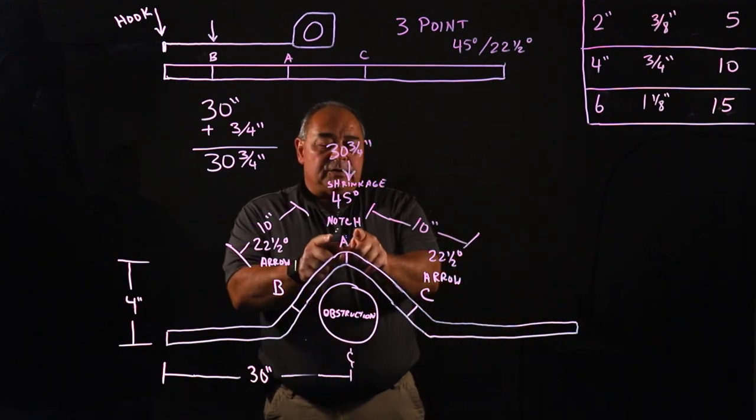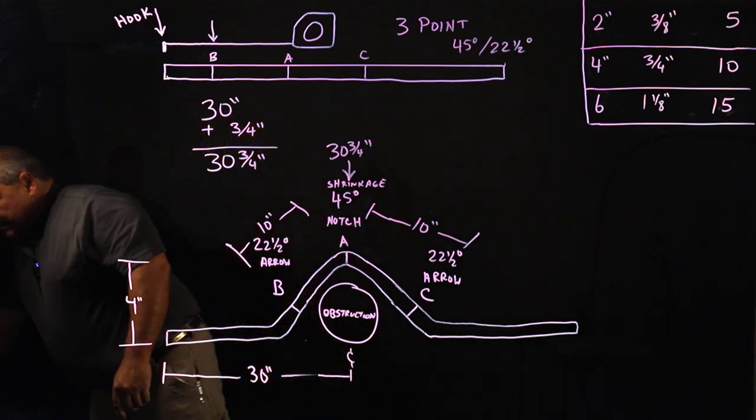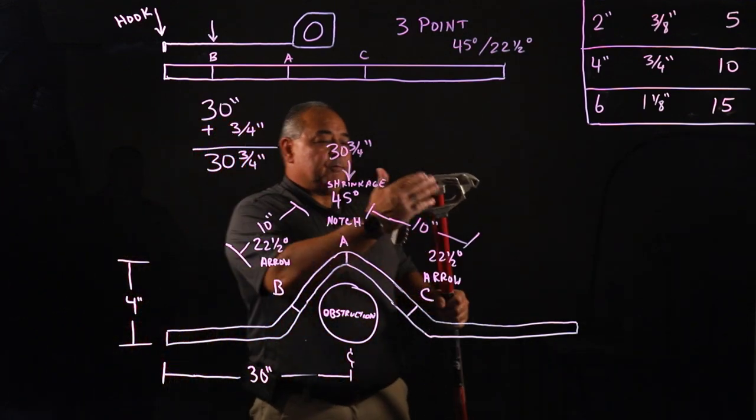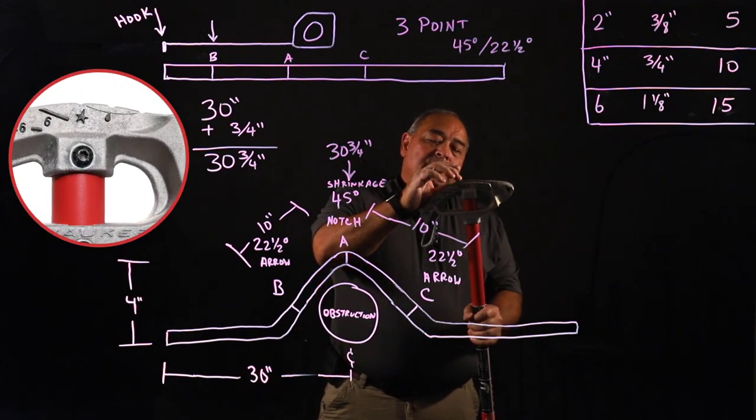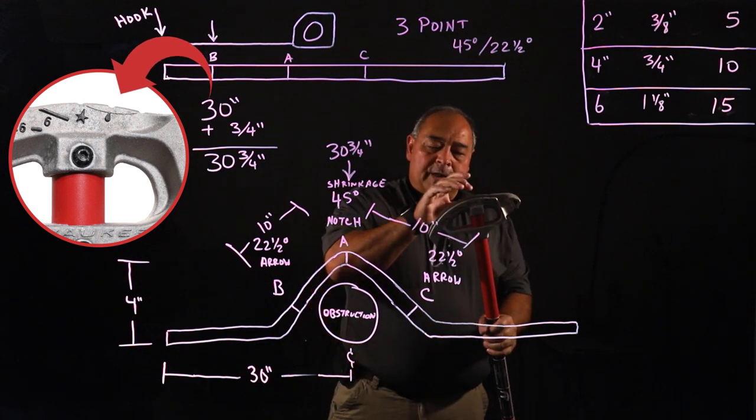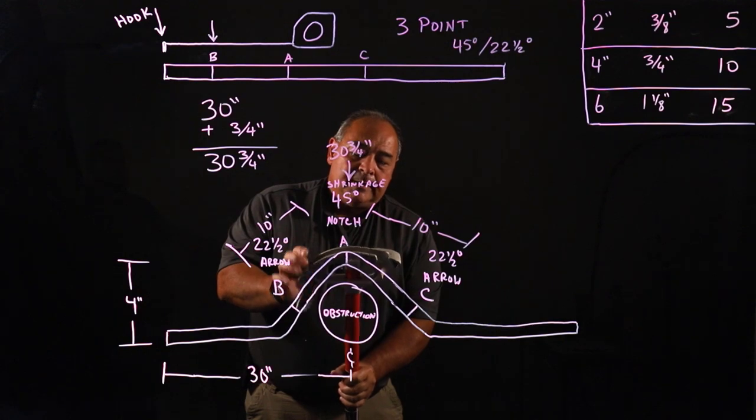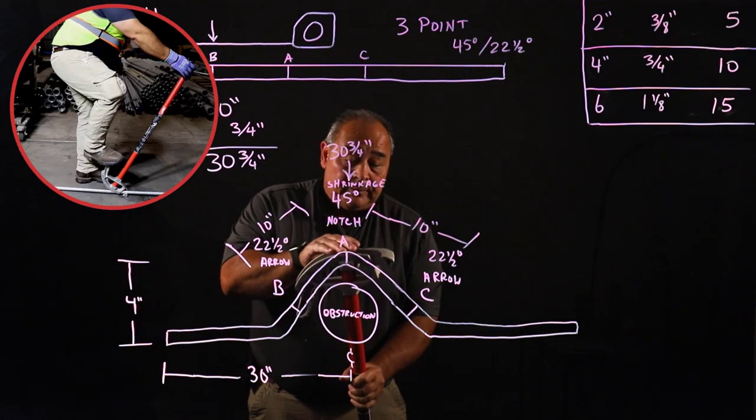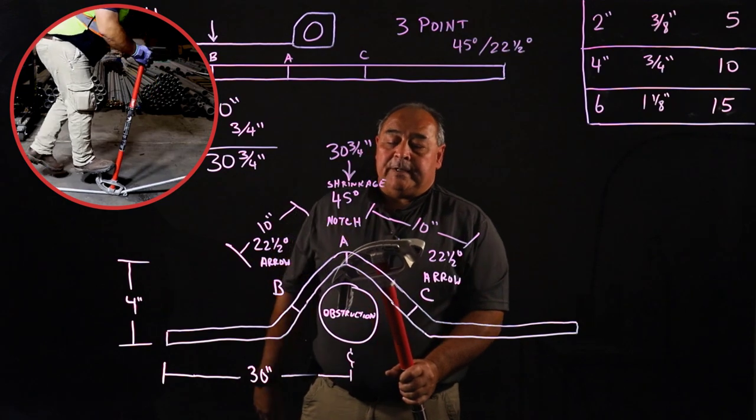We're going to use that notch. So it's not going to be the arrow for the A. There's rim notches in this bender. It's hard to see. There's rim notches that tell us that's where that measurement goes. It does not go on the arrow. It goes on the rim notch. We bend that reference at 45 degrees.